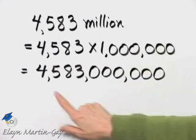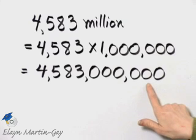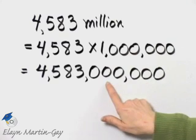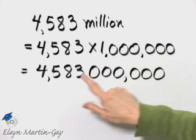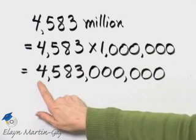How would we read this? We would read this as - this is the ones period, the thousands period, the millions period, and this is the billions period.